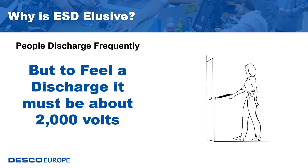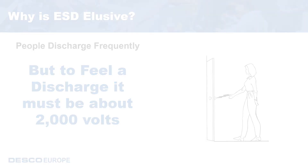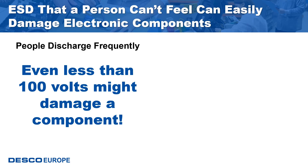Many CMOS technology components used in your facility can be damaged by discharges of less than 1000 volts. Some very sophisticated components can be damaged by charges as low as 10 volts. Many discrete MOSFET devices can be damaged by ESD events of less than 1000 volts. Sophisticated components such as those used in GMR — giant magneto-resistive disk drive recording heads — face challenges from even 10-volt discharges, and even less than 100 volts might damage a component.